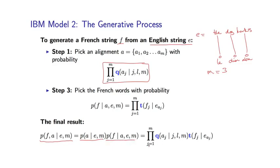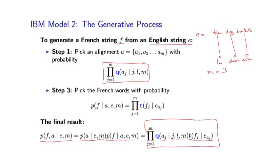So I end up with this model form: a product from j equals 1 to m, where for each j I have both a distortion parameter and a translation parameter. I have Q of A sub j conditioned on the position and the two lengths, and then the translation parameter — the probability of f sub j being emitted from E sub A sub j. That is the final model form for IBM Model 2.